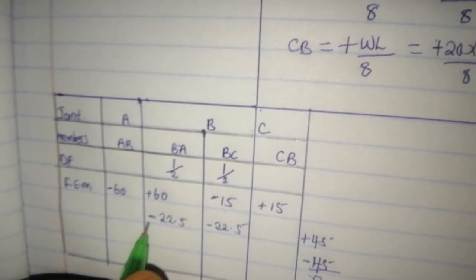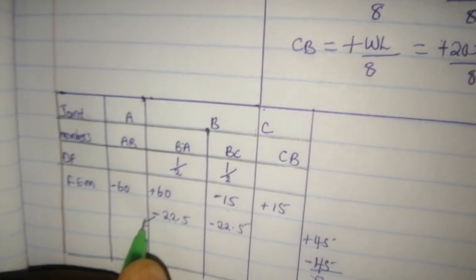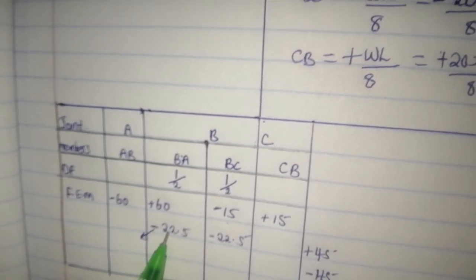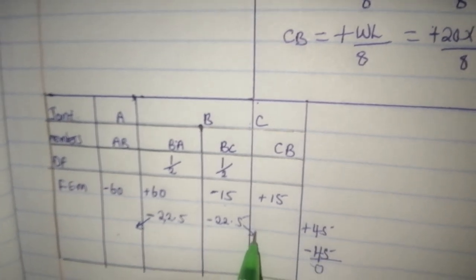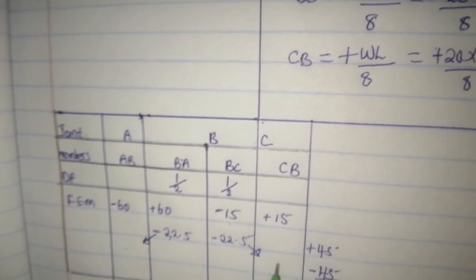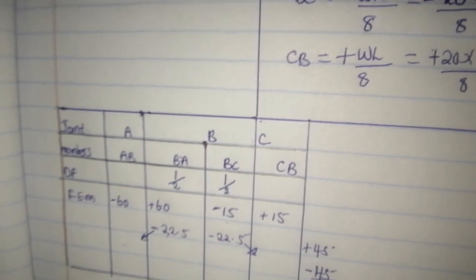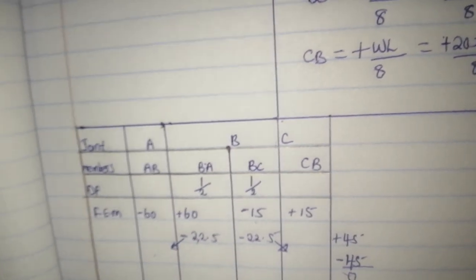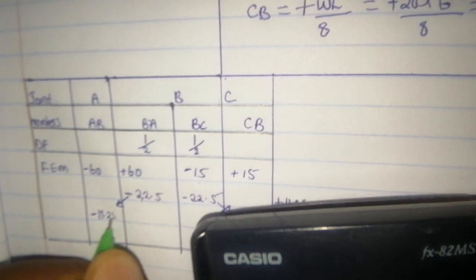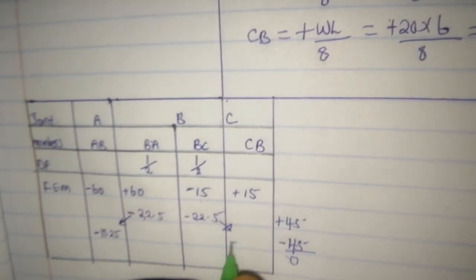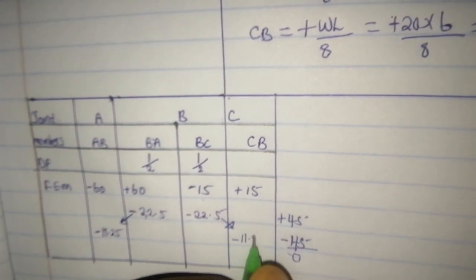Then we carry over half of each distributed moment to the far ends. Half of 22.5 divided by 2 gives negative 11.25, which is carried over to A, and negative 11.25 is carried over to C.